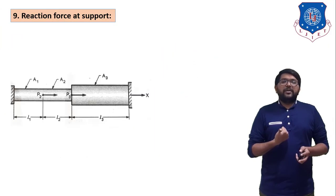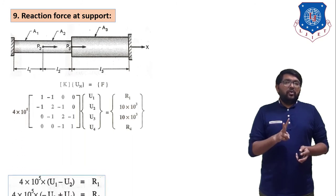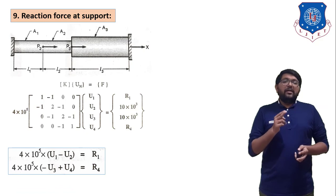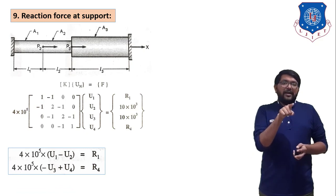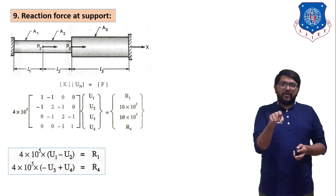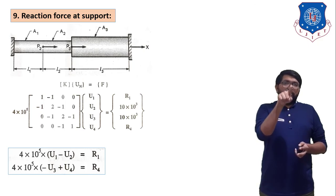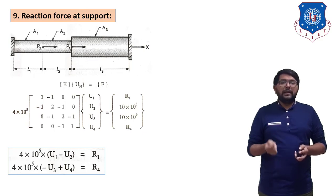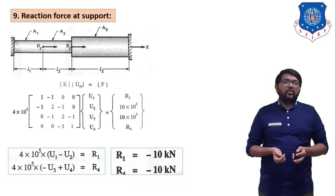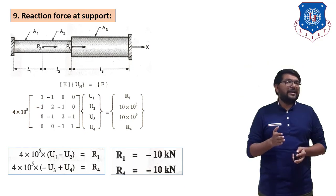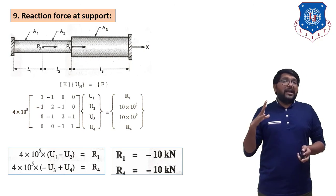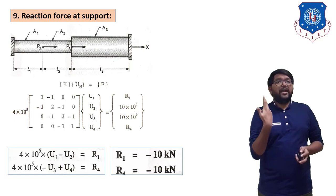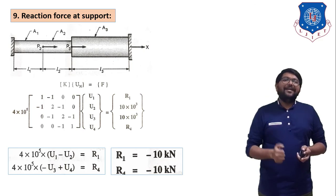Finally, we find the support reactions. For R1, multiply the first row of the global stiffness matrix by the displacement vector: 4 × 10⁵ × (U1 − U2) = R1, giving R1 = −10 kN. For R4, multiply the fourth row: 4 × 10⁵ × (−U3 + U4) = R4, giving R4 = −10 kN. Total applied force is 20 kN in the positive direction and 20 kN in the negative direction — confirming equilibrium. The solution is verified. Thank you.